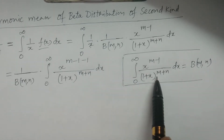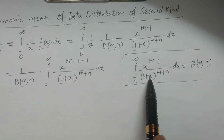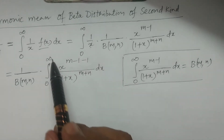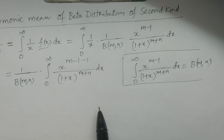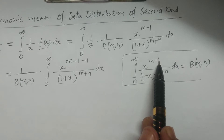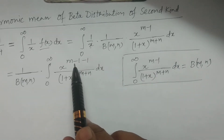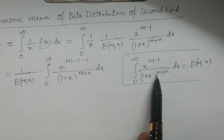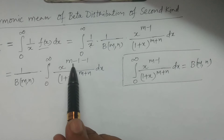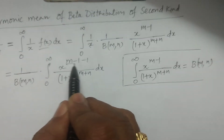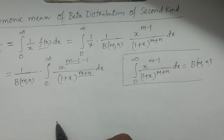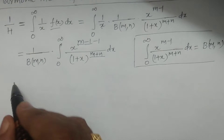These two integrals look similar, but we need to change some parameters. The limits are 0 to infinity. In our integrand the power of x is m minus 1 minus 1, so the parameter is m minus 1, not m. Similarly, the denominator has 1 plus x whole power m plus n, but the parameter here must also be adjusted to match m minus 1.